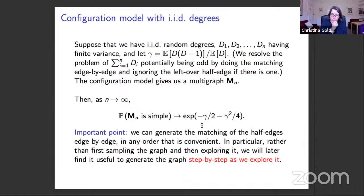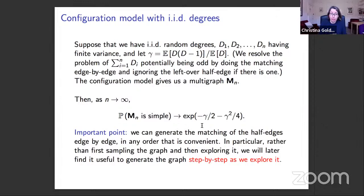An important point is that we can generate the uniform matching of half-edges edge by edge in any convenient order. In particular, we can explore the graph vertex by vertex, and we can actually sample the graph as we explore it — generating the graph and the exploration simultaneously, step by step.